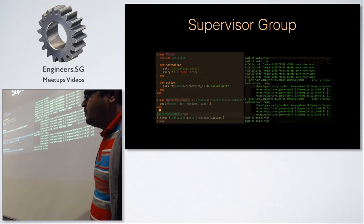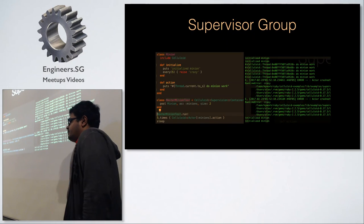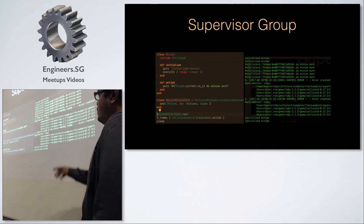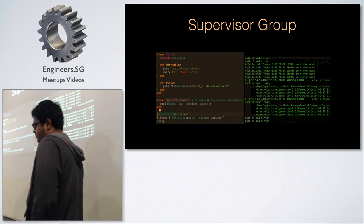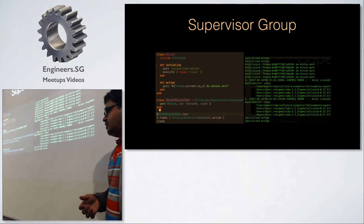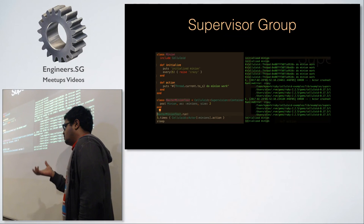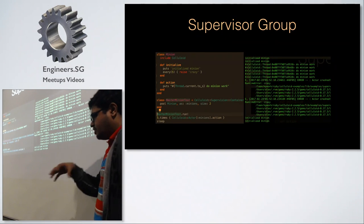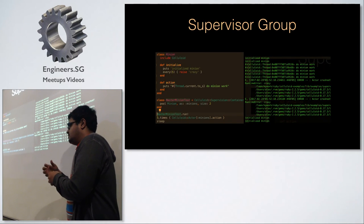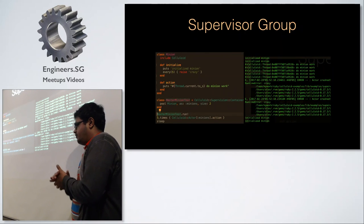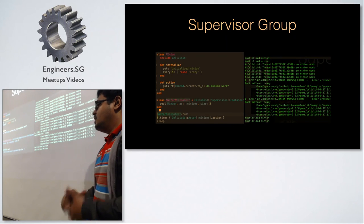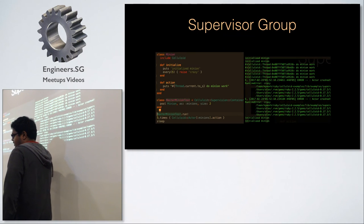An audience member compares this to a standard queue with a pool of workers, which is correct. On the topic of green threads: Celluloid uses fibers rather than actual green threads because Ruby doesn't have true lightweight scheduled micro-processes like Erlang. Erlang has a pool of OS threads and schedules lightweight processes across them, suspending and resuming as needed. Celluloid uses fibers to simulate similar behavior, but each actor is still tied to a thread — which is not the same as Erlang.